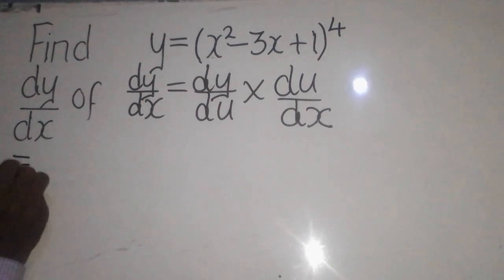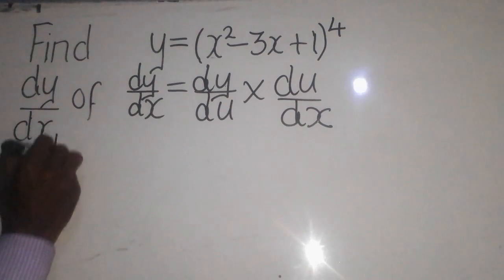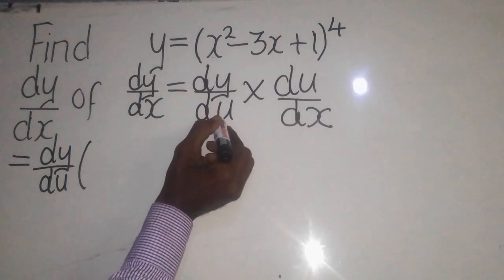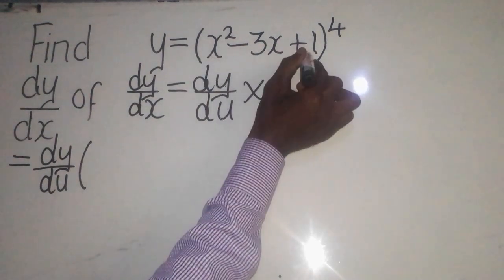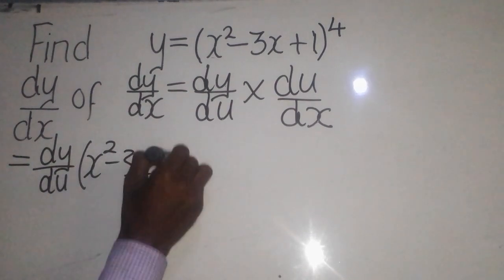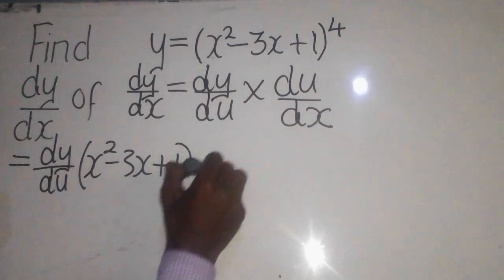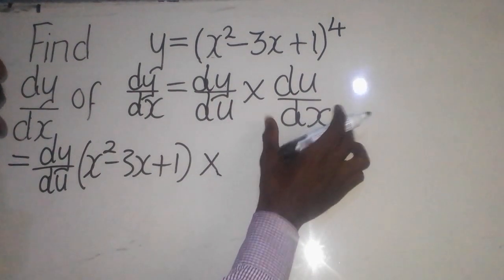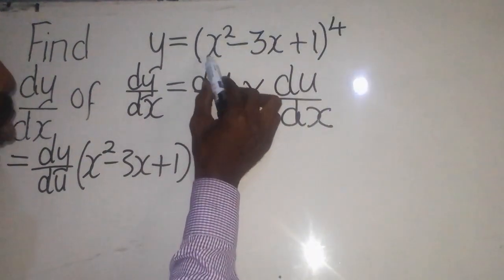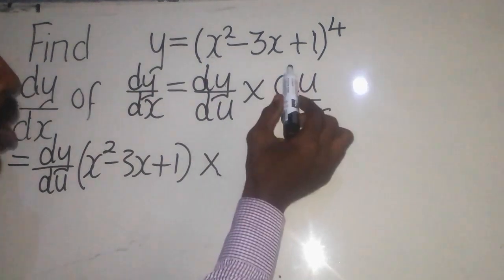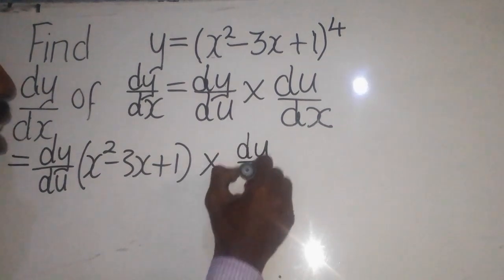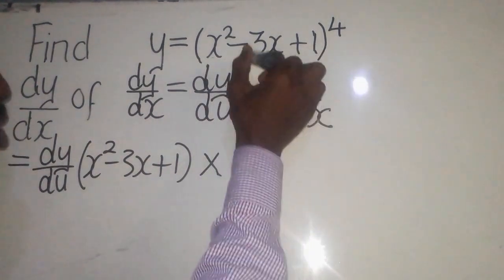So now let's start. We say dy over du — the one which you have to differentiate is this one, which is for u. So you say x squared minus 3x plus 1, and you place brackets around it. Then you go to du over dx. Since what is inside is represented by u, then it will be du over dx.